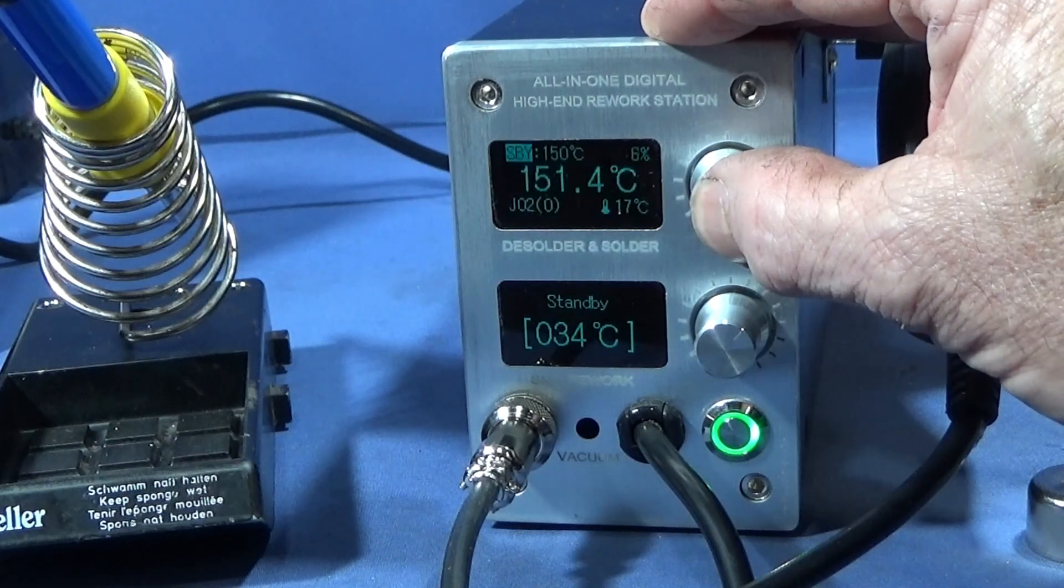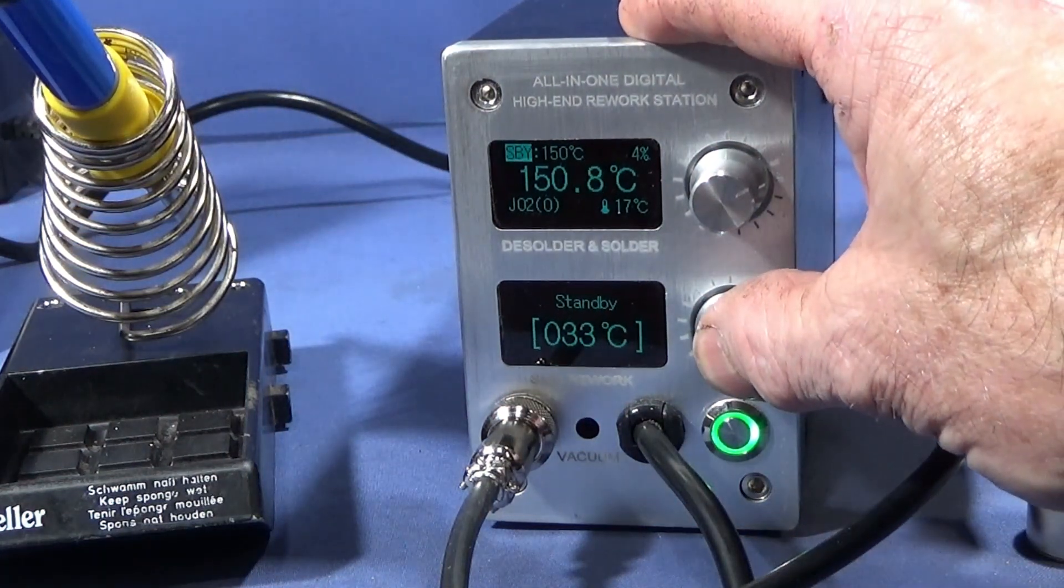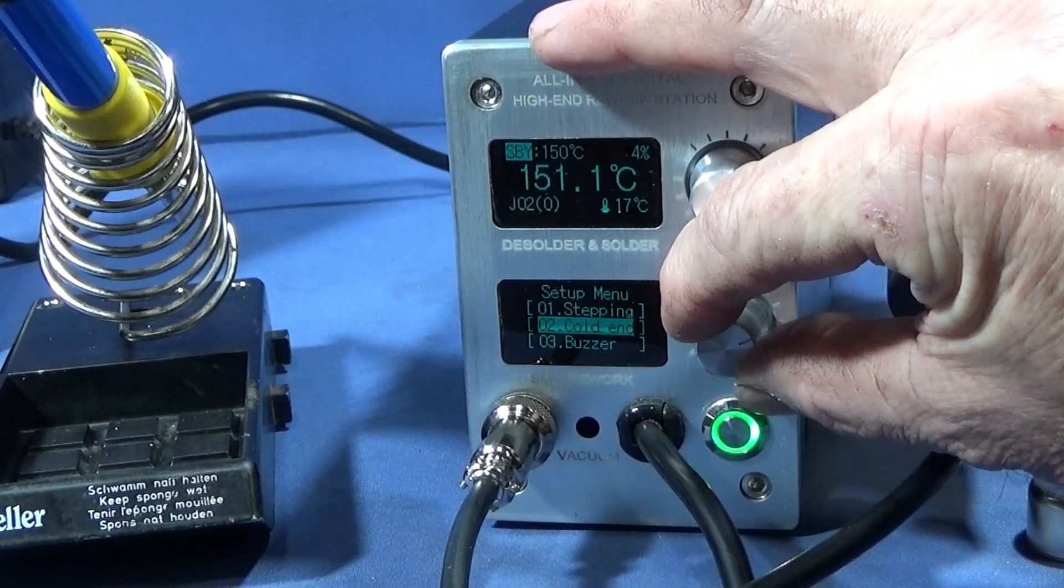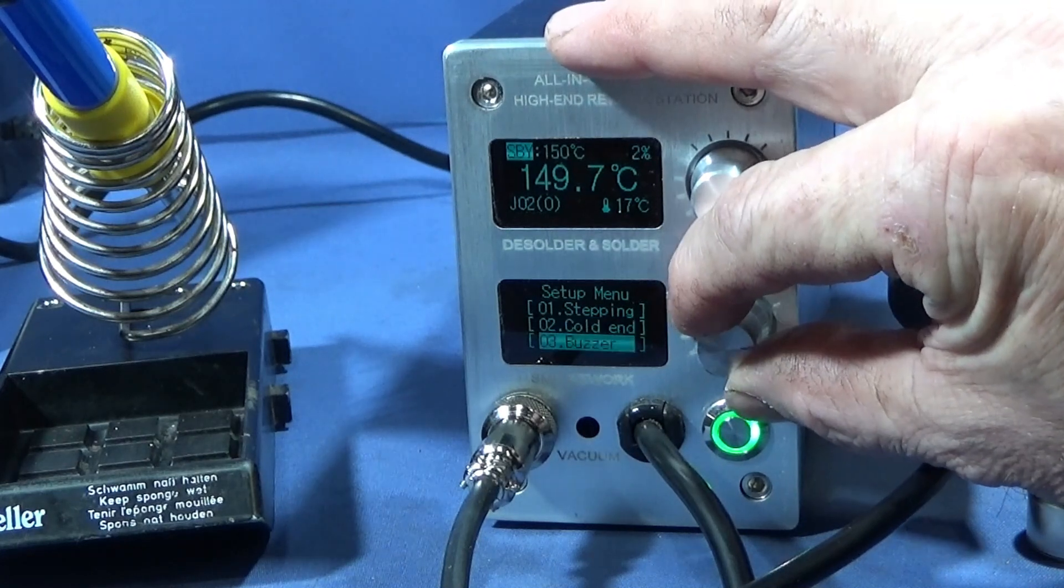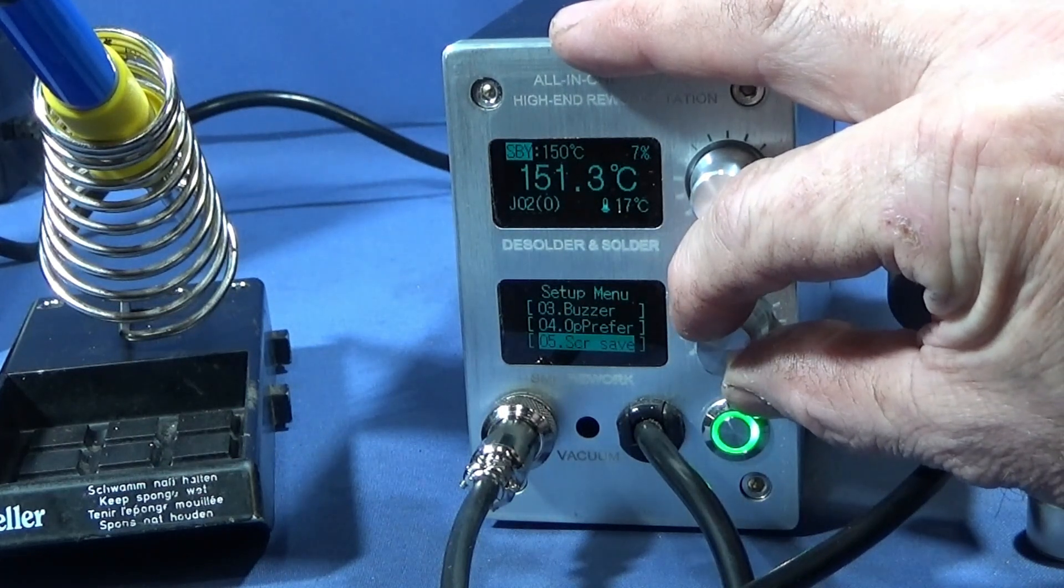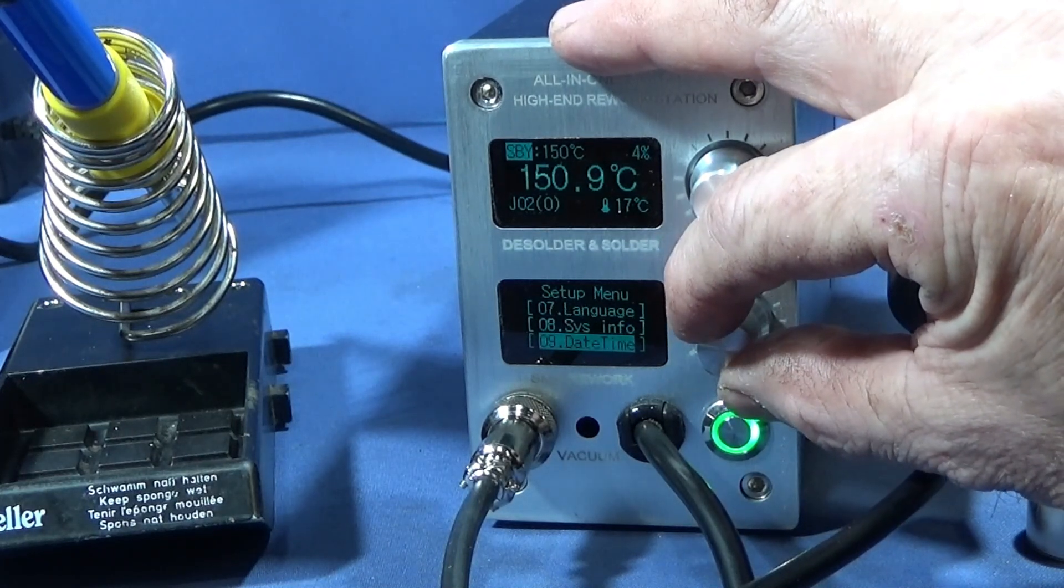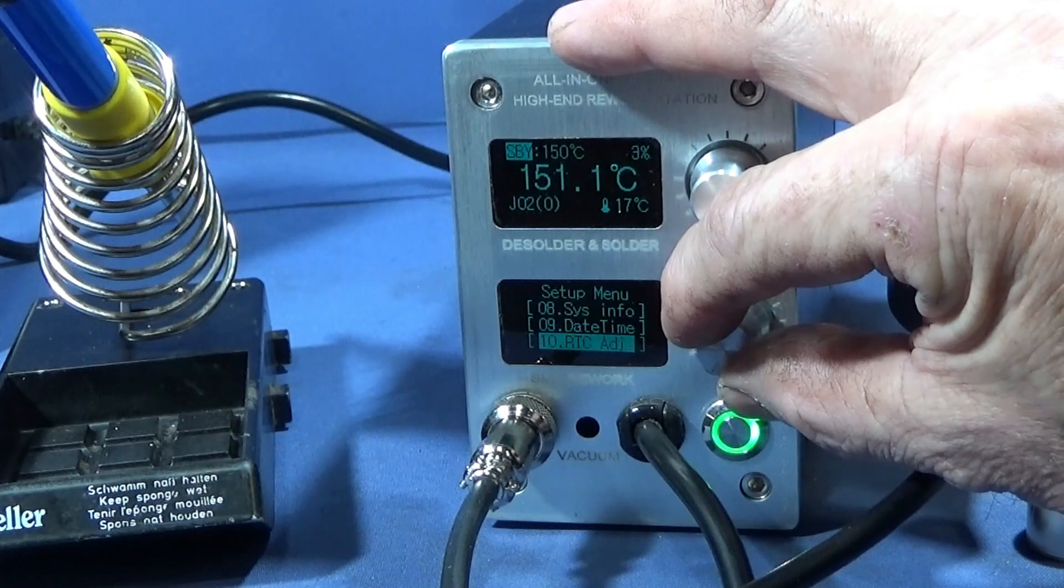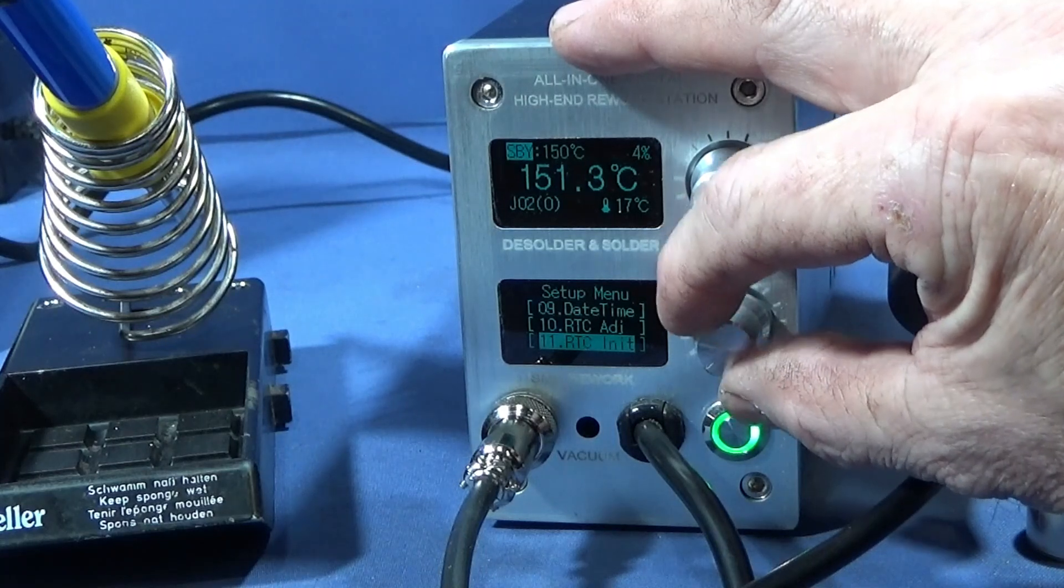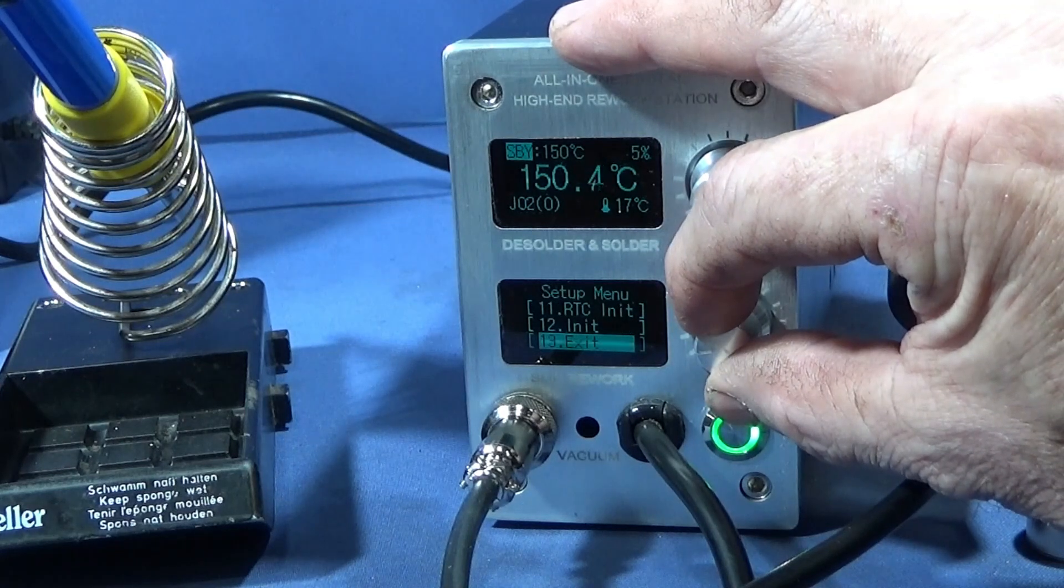On the heat gun, press and hold and the menu comes up. You've got stepping, cold end, buzzer, prefer, screen saver, password, language, system info, date and time, RTC adjust, ATC initialization, and initialization. Number 13 is exit.